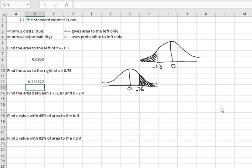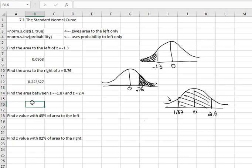This third example wants to find the area between two values. And so if I draw my little normal curve on my scratch paper, we've got a negative 1.87 and a 2.4. And we want the area between those two values. Well, if I put in the 2.4, it's going to give me all the area to the left of the 2.4. And we want to exclude the area in the tail to the left of negative 1.87, which means I can subtract the two areas.